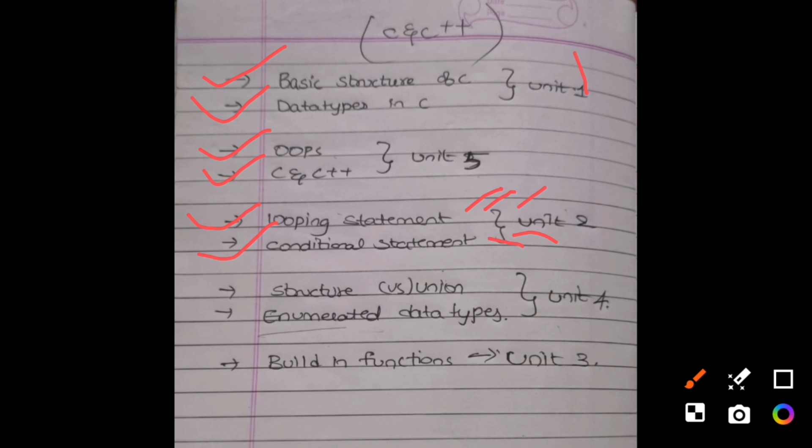Next, in fourth unit, structure and union differences and enumerated data types. These two questions I have given. We can expect one question from this. The last one is built-in functions. If you prepare these nine questions along with programs, then you can easily pass in C and C++.